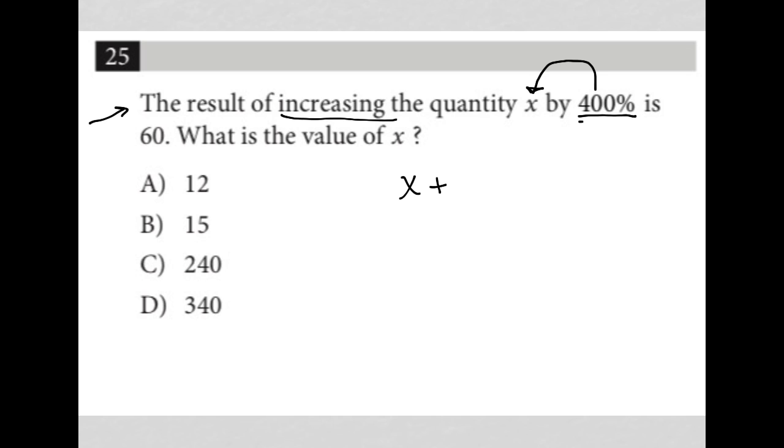Anytime we use a percentage in an equation, we always want to convert it into its decimal form. The decimal form for 400% is actually 4.